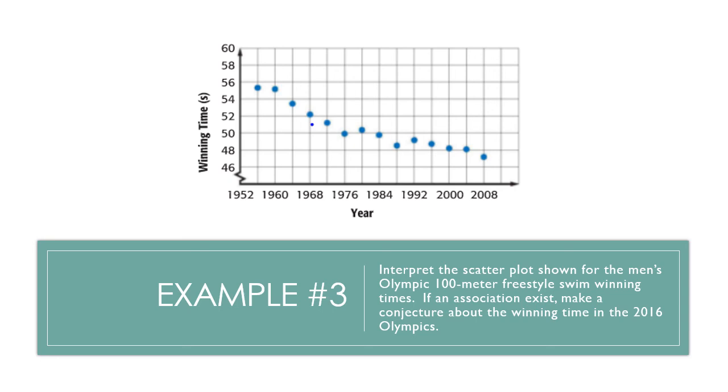Let's look at example three. Interpret the scatter plot shown for the men's Olympic 100 meter freestyle swim winning times. And if the association exists, make a conjecture about the winning time in the 2016 Olympics. First things first, is this a positive or a negative association? This one is a negative association, as we notice that our times are going down. So our times are going down.